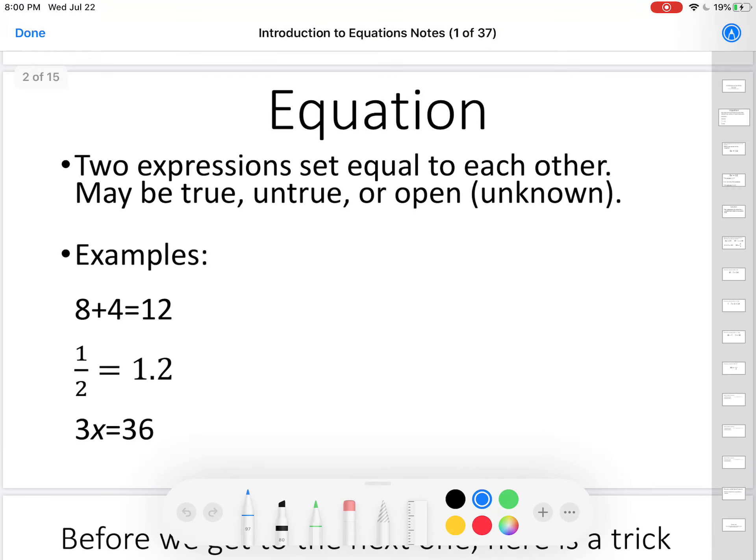First, a definition. Equations are two expressions which are set equal to each other. They might be true, they might be untrue, or they might be open, which means we don't know if they're true or not. Here's some examples.